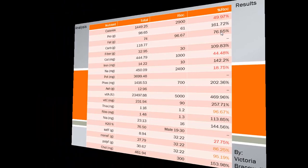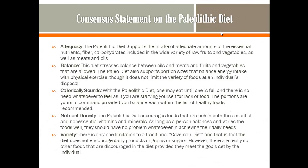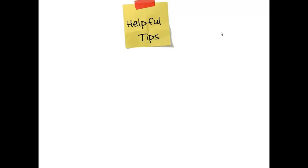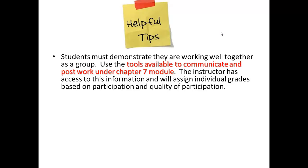Using the information found at the literature search and the diet analysis, we develop a consensus statement, as this group did. Then you post your results. Here are some helpful tips to help you earn a full grade for this activity: demonstrate that you're working well together as a group. Under the Chapter 7 module there's a group space where you all can post your individual work. Make sure that you don't repeat each other with the literature search and make sure everybody's on the same page so you produce a product you'll be proud of.